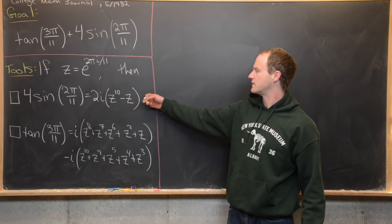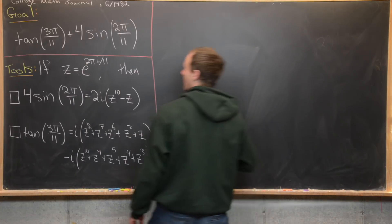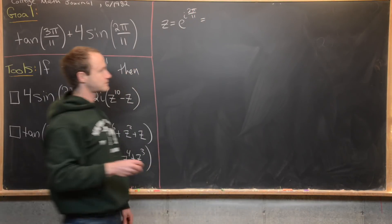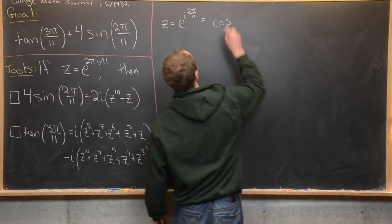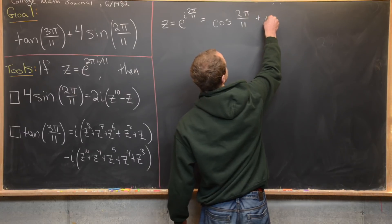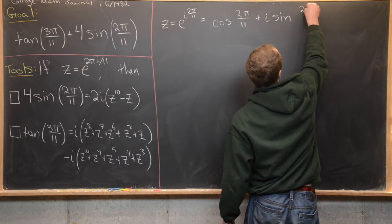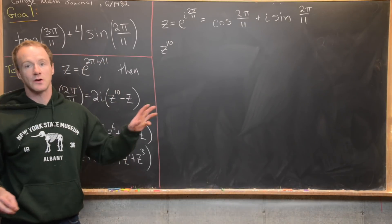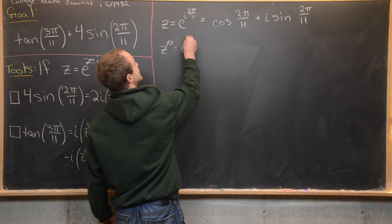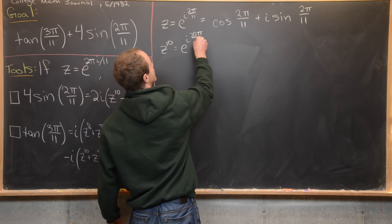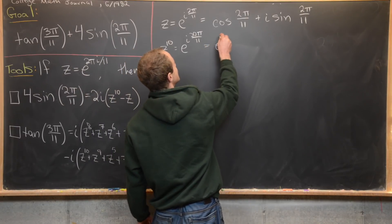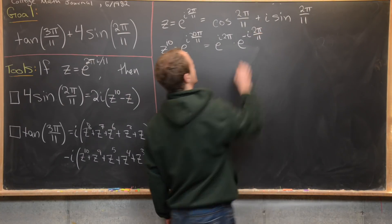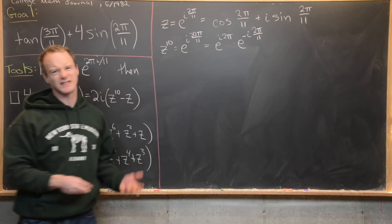Let's go ahead and prove the first identity. We take z = e^(2πi/11) and expand with Euler's formula: z = cos(2π/11) + i·sin(2π/11). Next, we raise this to the 10th power, getting e^(i·20π/11). Notice that's the same thing as e^(i·2π) times e^(-i·2π/11), and since e^(i·2π) = 1, we have z^10 = e^(-i·2π/11).